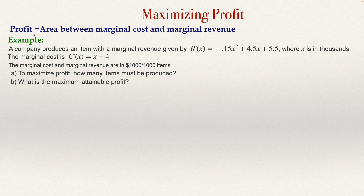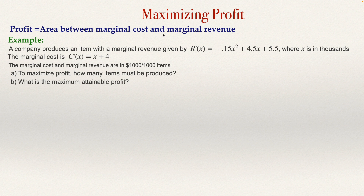The profit is the difference between the cost and the revenue. This will be the profit at some point, but the total profit will be the derivative of this. The derivative of the cost is the marginal cost, and the derivative of the revenue is the marginal revenue. So if we are computing the derivative of the revenue minus the cost, what we obtain is the marginal revenue minus the marginal cost. So the total profit will be the area between the marginal cost and the marginal revenue.